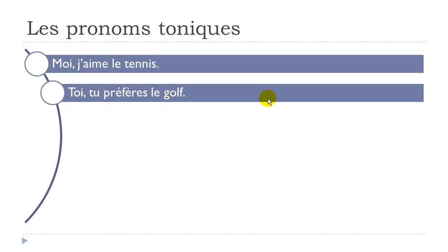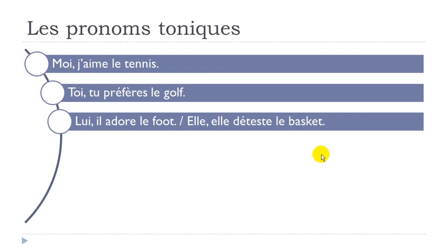Second example: TOI, TU PRÉFÈRES LE GOLF — préférer means 'to prefer.' TOI, TU PRÉFÈRES LE GOLF. Then we've got the masculine form: LUI, IL ADORE LE FOOT — LUI is the pronom tonique, IL is the pronom personnel, adoré means 'to adore,' and we're talking about football. And the feminine form: ELLE, ELLE DÉTESTE LE BASKET — déteste means 'to hate' — ELLE, ELLE DÉTESTE LE BASKET. Even if you see ELLE twice, remember you have two different pronouns: the pronom tonique and then the pronom personnel.